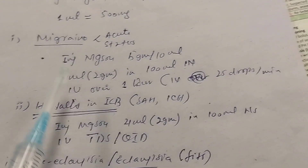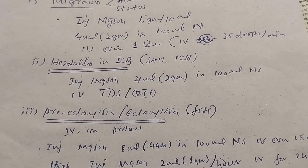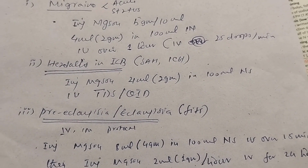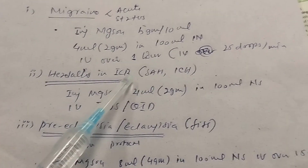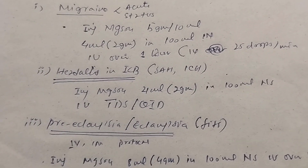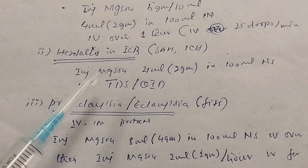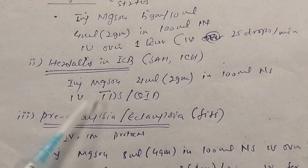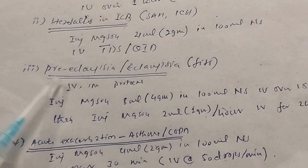For headache due to intracranial bleed — whether subarachnoid hemorrhage or intracranial hematoma — and to reduce raised intracranial pressure, we give magnesium sulfate 4 ml (2 grams) in 100 ml normal saline IV. This can be given twice daily, 4-hourly, 8-hourly, or 12-hourly depending on the patient's headache severity or degree of raised intracranial pressure.